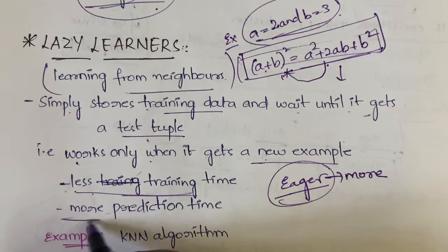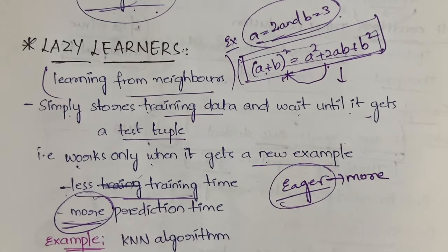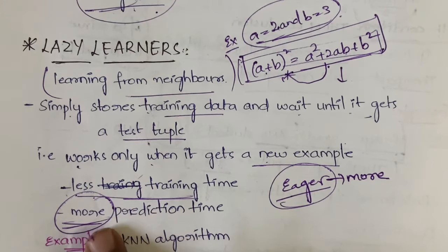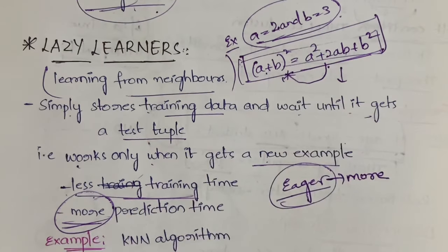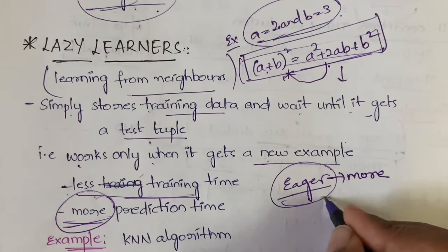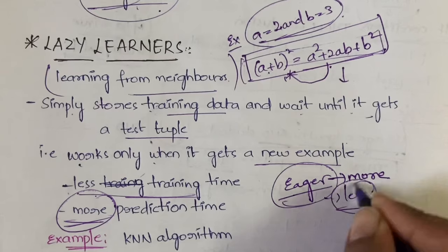And here it has more prediction time. Why? Because it's doing the analysis part once you give the example. But in case of eager learning, you will have less prediction time because analysis is already done beforehand.